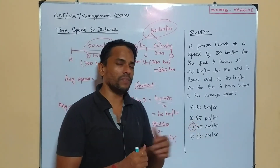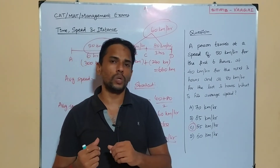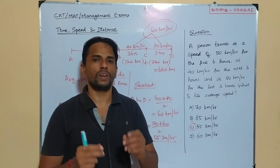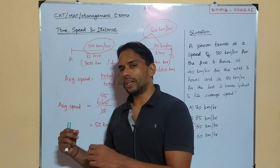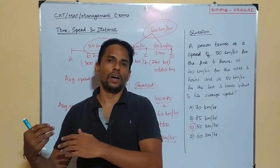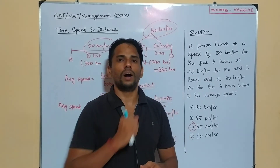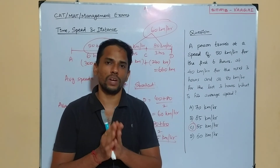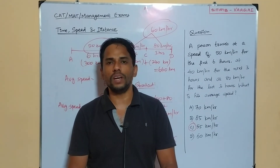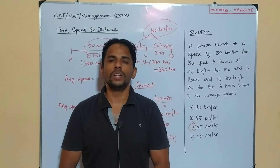So option C — 55 km per hour — is the overall average speed and the answer to this question. I hope the approach used to solve this problem is clear. If you have any doubts, please comment in the comment box and I'll respond. I've also made introduction videos on average speed and different cases, and I'll attach links in the description for your convenience. We'll catch up with another interesting question in our next session. Thank you so much.